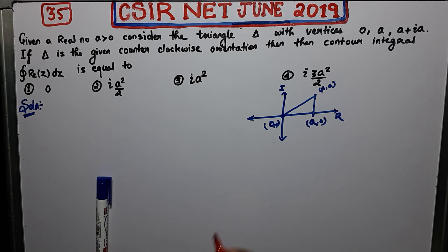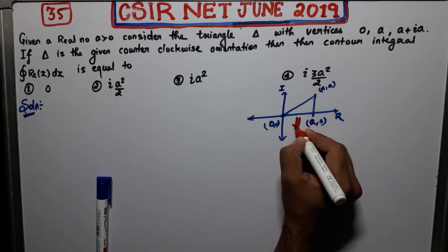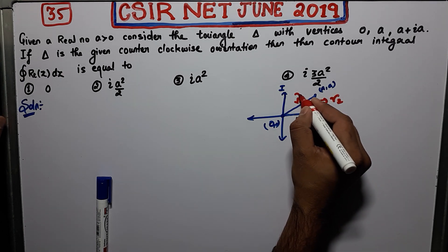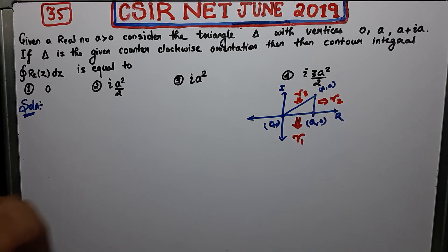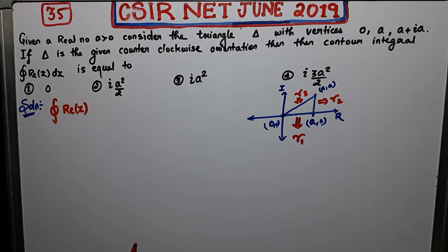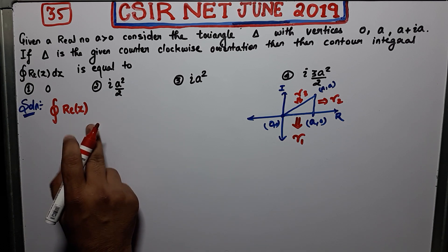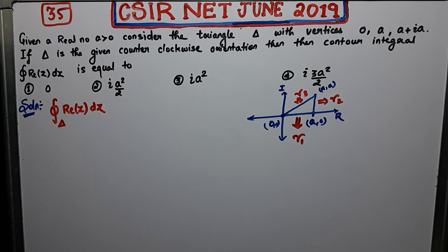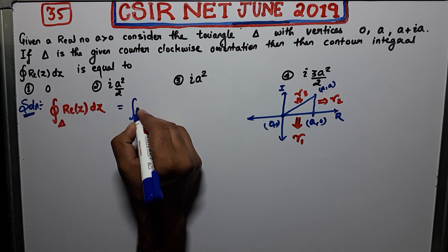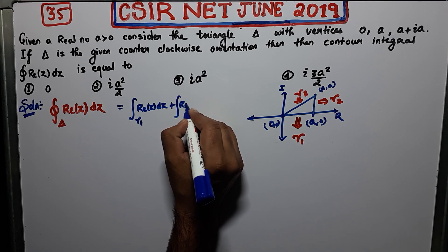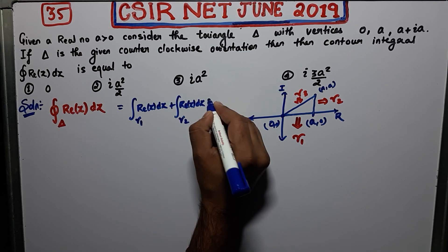Now let us name them. We have a triangle contour and let us partition it: this one is gamma 1, this one is gamma 2, and this one is gamma 3. You need to evaluate the function Re(z). What is Re(z)? If z = x + iy, then Re(z) = x. So you need to evaluate the integral of x dz over this triangle.